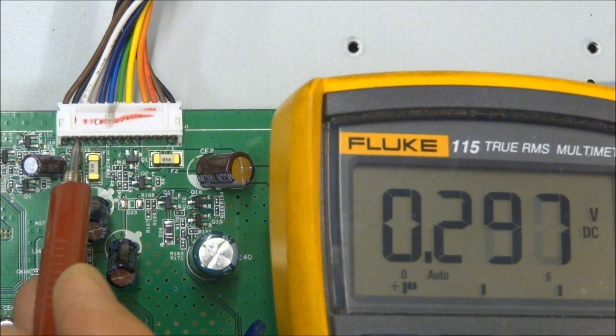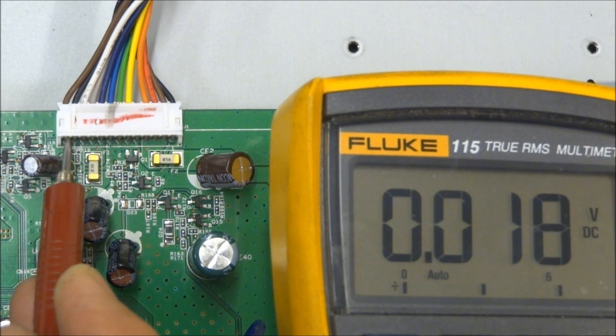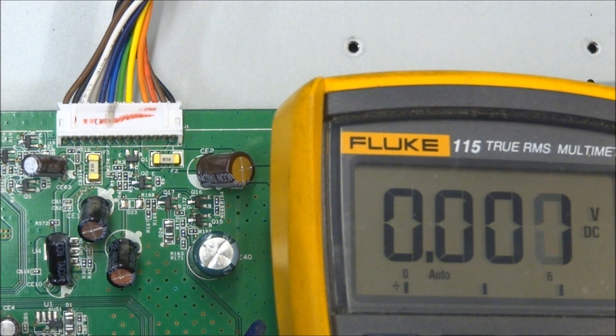Pin 12 is the backlight level control. And pin 13 is the backlight on-off control. So let me turn the TV on, and we'll measure those voltages one more time with the set on and running.